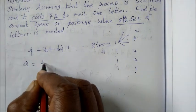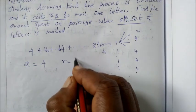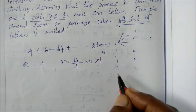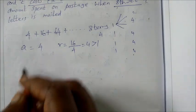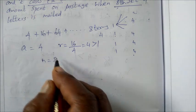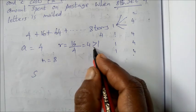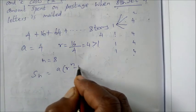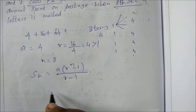So then a is 4, and the ratio r is 16 divided by 4, that is 4 which is greater than 1. So now to find S8, n is 8, r greater than 1, so Sn equals a times r to the power n minus 1 divided by r minus 1.